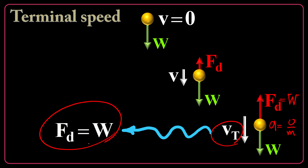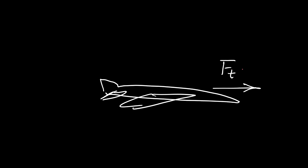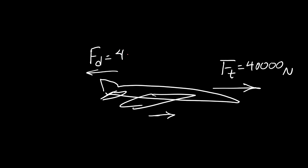What about a car or an airplane? It is almost the same, but it is not W that drives the object. Here I have an airplane moving rightward. The thrust force Ft equals 40,000 newtons. As the airplane speeds up, the drag force grows larger. Finally, when the drag force equals 40,000 newtons, the airplane reaches terminal speed and will not accelerate anymore. This is why the speed of an airplane, even with a constant thrust force applied, will not be infinite.